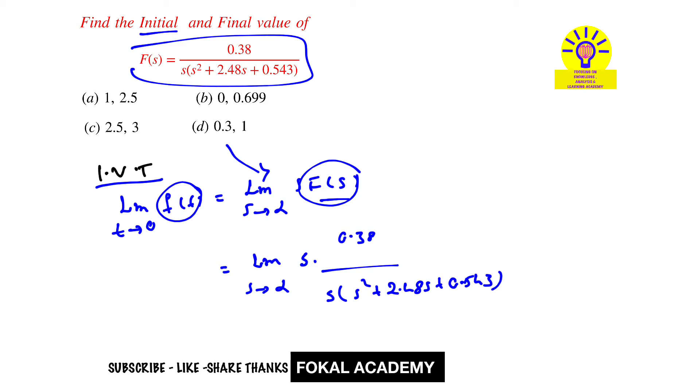The s terms cancel, giving lim(s→∞) 0.38/(s² + 2.48s + 0.543). Factoring out s² from the denominator, the equation becomes 0.38/(s²(1 + 2.48/s + 0.543/s²)).